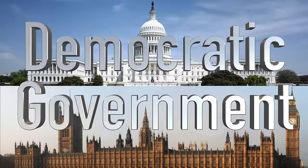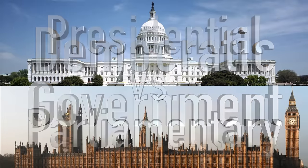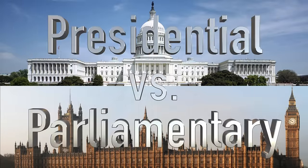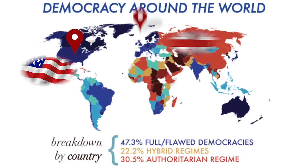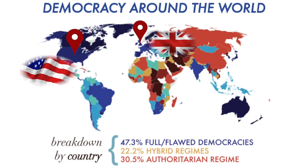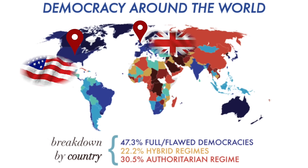This is an explanation of the two main systems of democratic government: presidential and parliamentary. Around the world, there are many variations of these two types, but we're going to focus on the United States and the United Kingdom because they exist on the opposite ends of the democratic spectrum and they've been the most influential to other countries around the world.